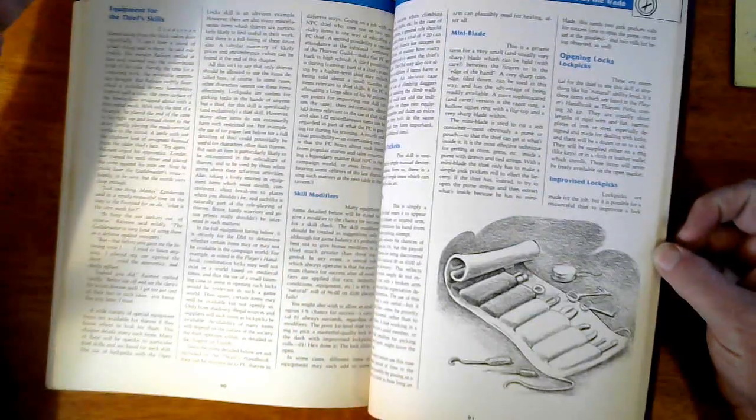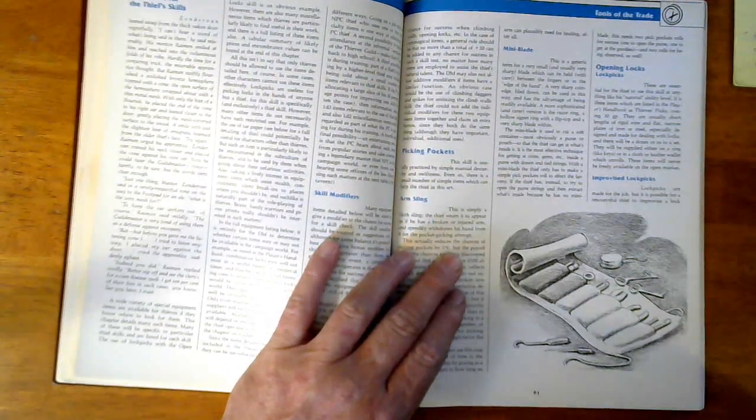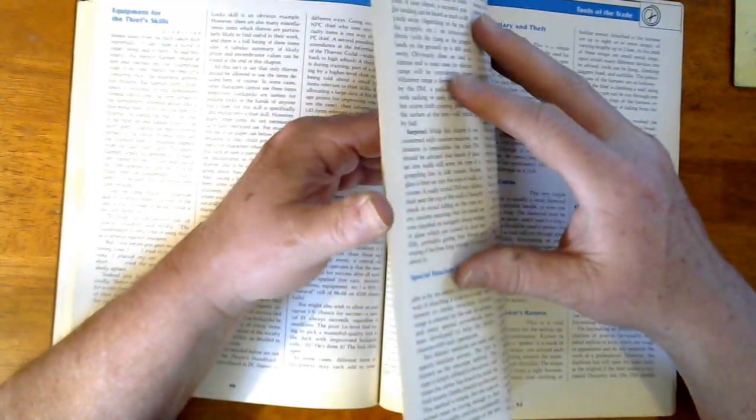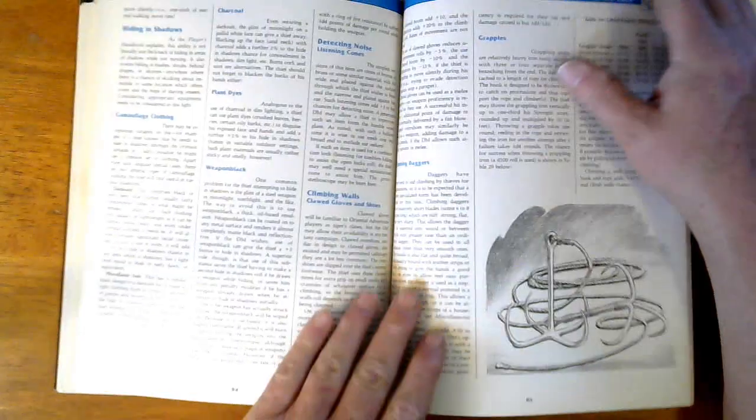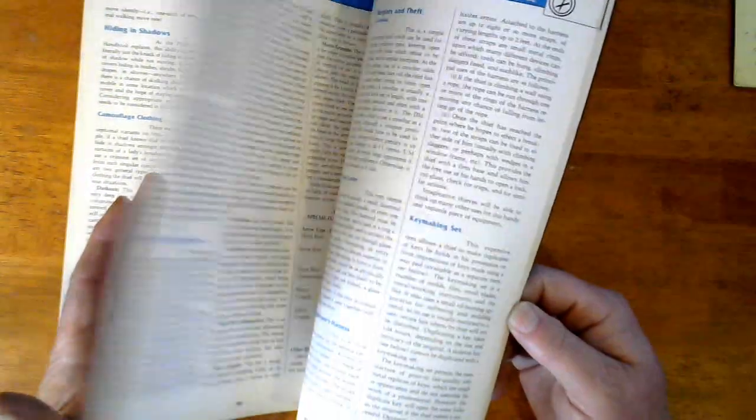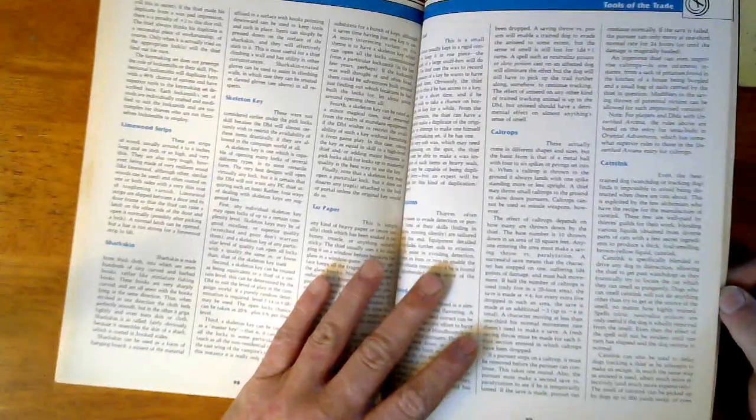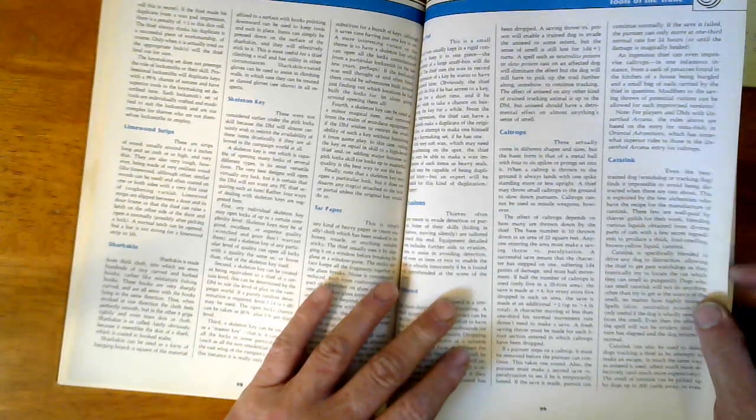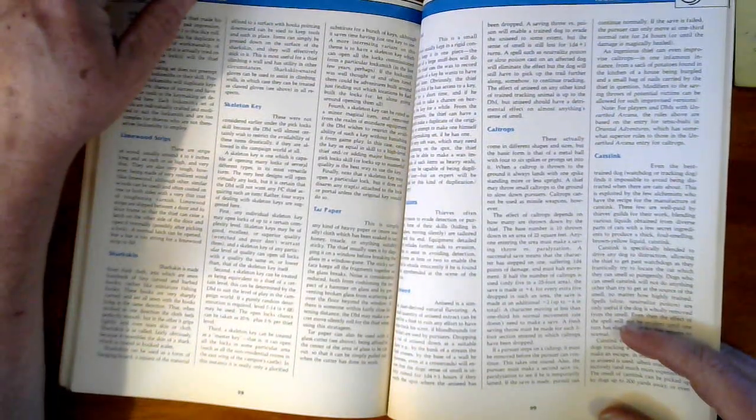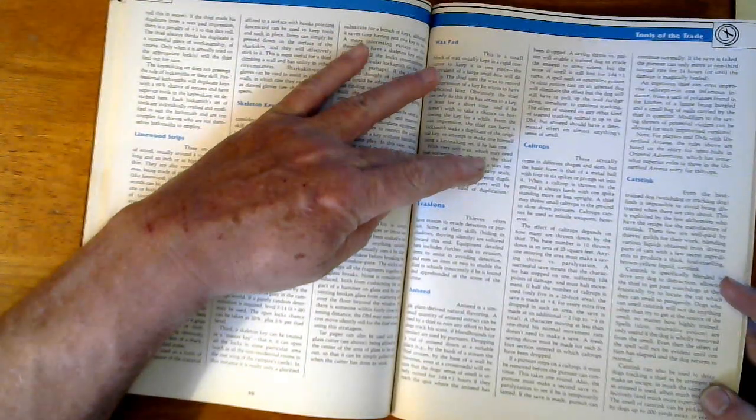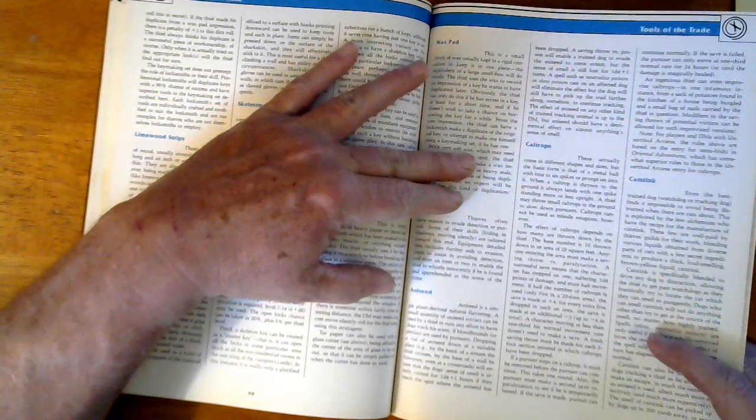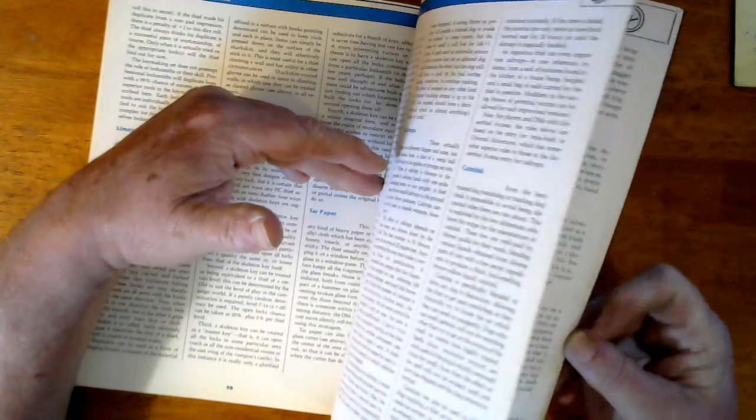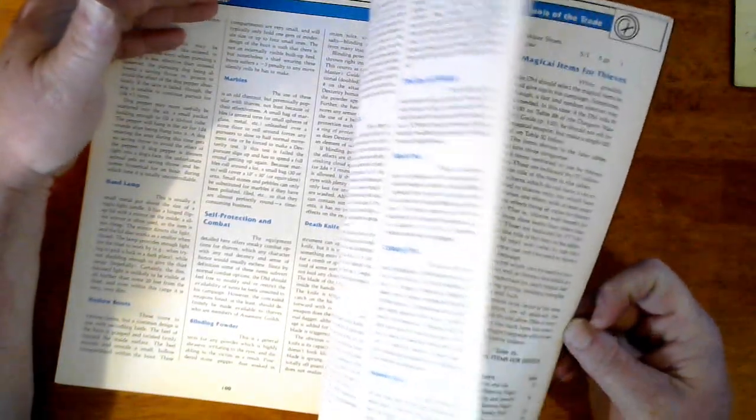Then we get into tools of the trade. We get a more expanded equipment list specifically for the rogue class, things that you would not expect to find on the general sell list for the Player's Handbook. Then we get some helpful tips and basic rules on how to use some of the stuff. Things like cat stink: even the best trained watchdog or tracking dog finds it impossible to avoid being distracted when there are cats about. Tar paper, shark skin, evasions. Thieves often have reason to evade detection or pursuit. Some of their skills like hiding in shadows and moving silently are tailored toward that. Equipment details to get your equipment set up so it's not going to chink and clink and rattle and move.